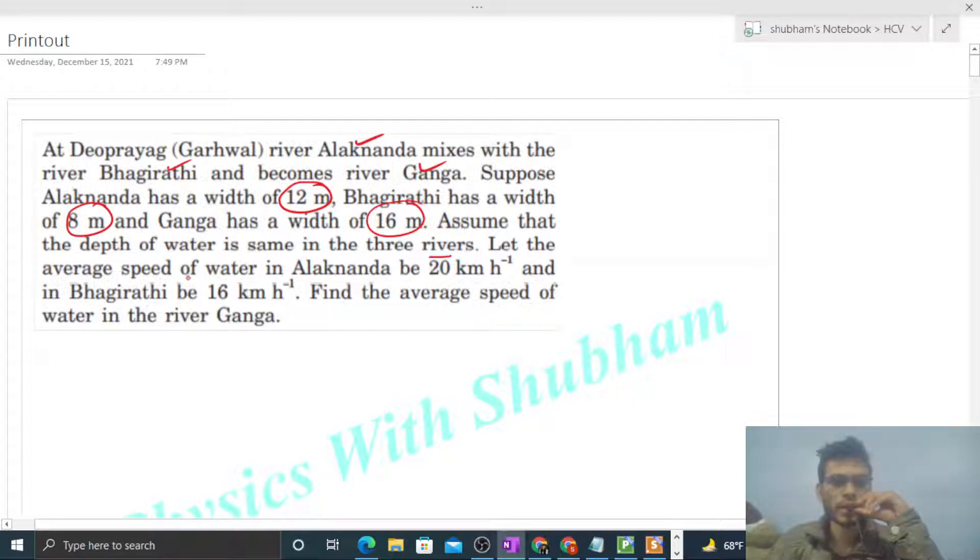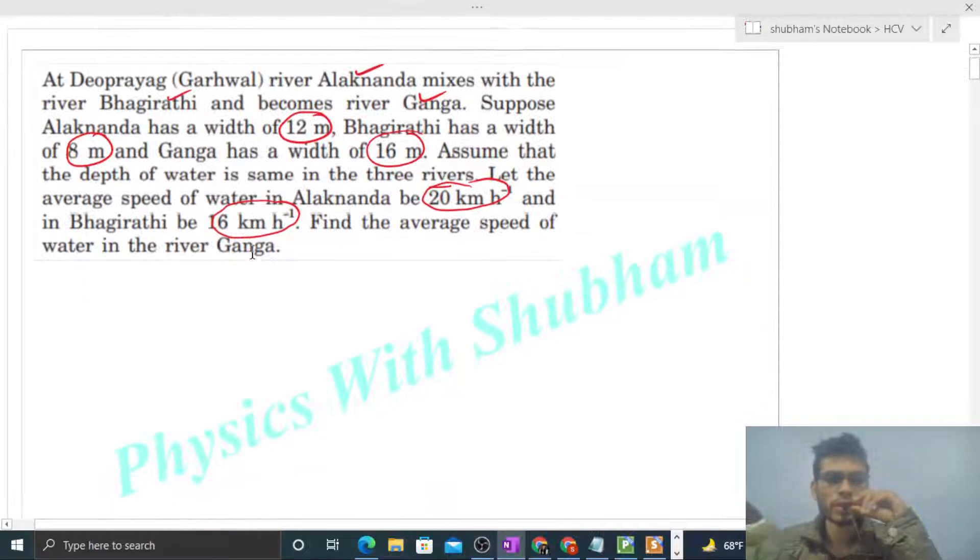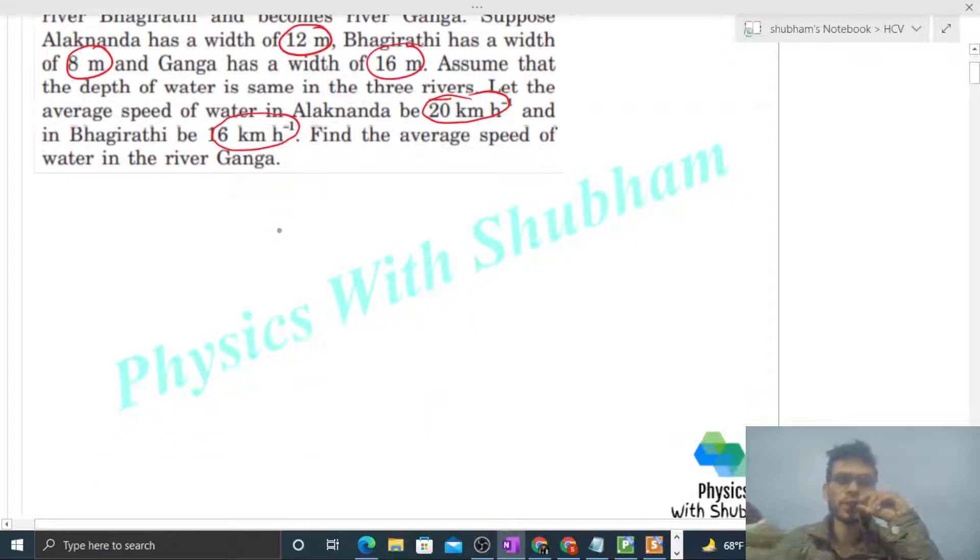Let the average speed of water in Alaknanda be 20 kilometers per hour and in Bhagirathi be 16 kilometers per hour. Find the average speed of water in river Ganga. So for this question, I'll make a system of rivers something like this.